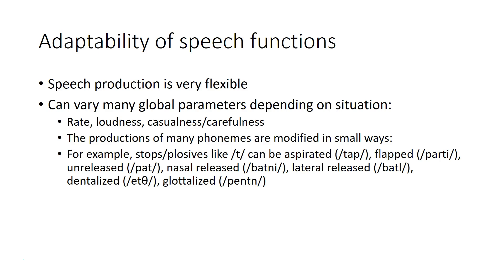A sound like a T can actually come out in a variety of different ways depending on the word. In a word like 'top,' it's aspirated. In 'party,' it's flapped—it might even sound like a D. In 'pot,' it can be unreleased, so there's no audible T release. In something like 'botany,' you can release that T directly into a nasal, so the released air goes out through the nasal cavity.